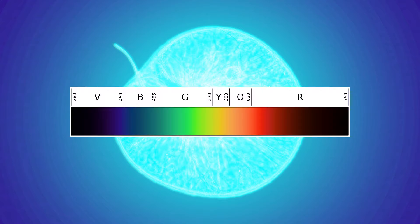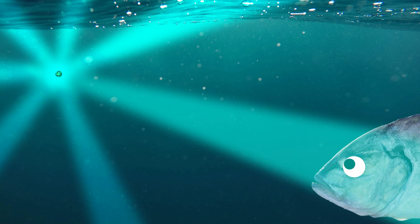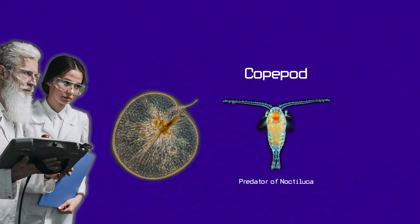The reason why the light is blue, and not, say, white or red or chartreuse, is because blue light — particularly blue light with a wavelength between 474 and 476 nanometers — can be seen from fairly far distances in water, which led scientists to believe that the point of dinoflagellate bioluminescence had something to do with the fact that these little creatures were trying to communicate something.